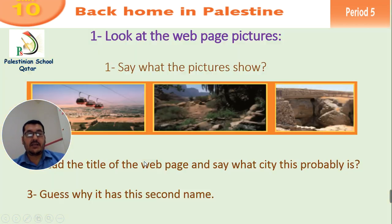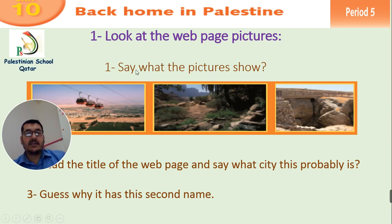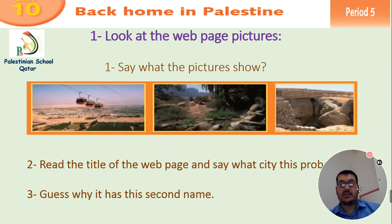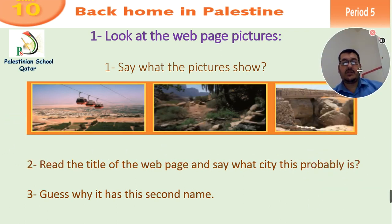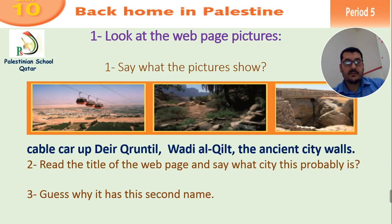Now let's come to the second exercise here on our page, page 32, period number five. We have the first exercise: look at the picture and say what the pictures show. Here we have three pictures. The first picture is Cable Car Deer Courantel. Number two, the second picture: Wadi Al-Kult. And the third picture is the ancient city walls.